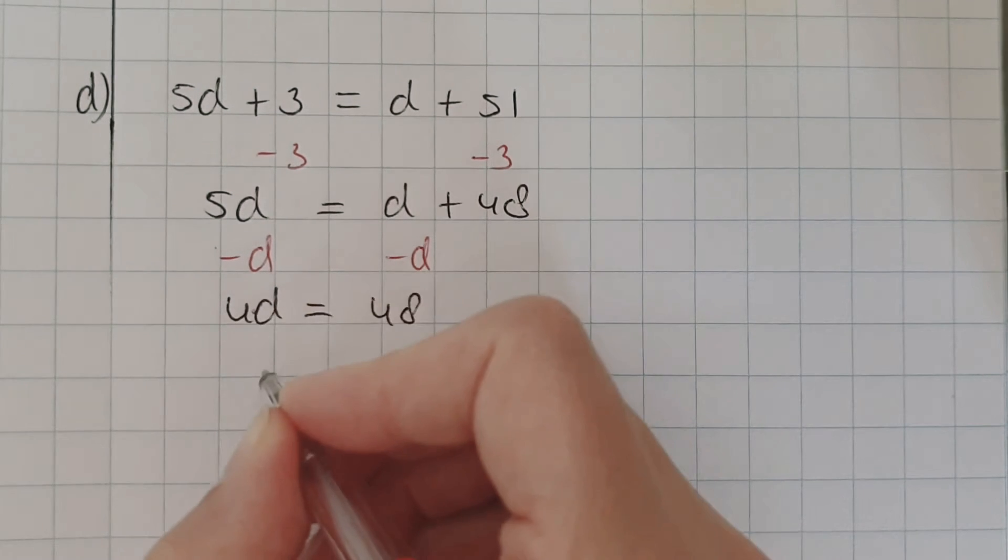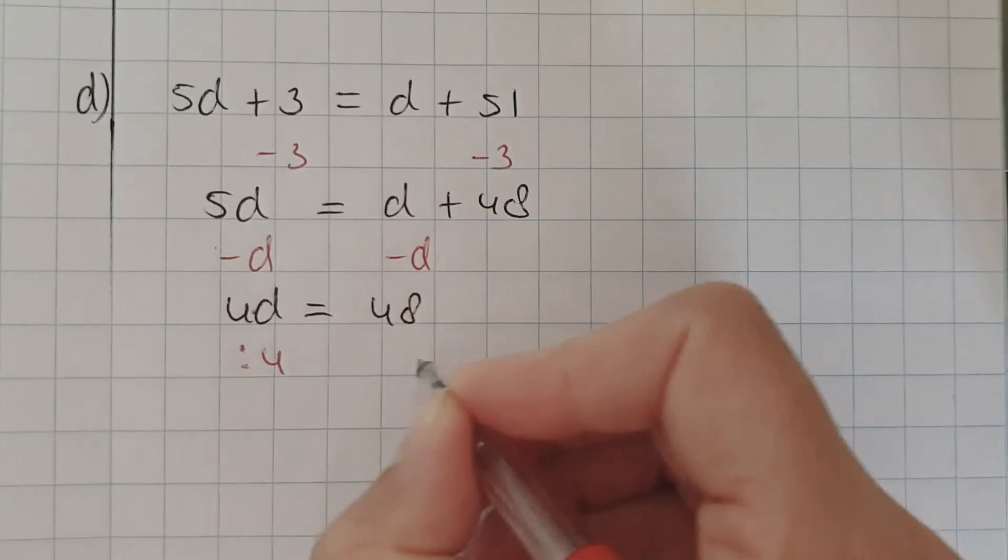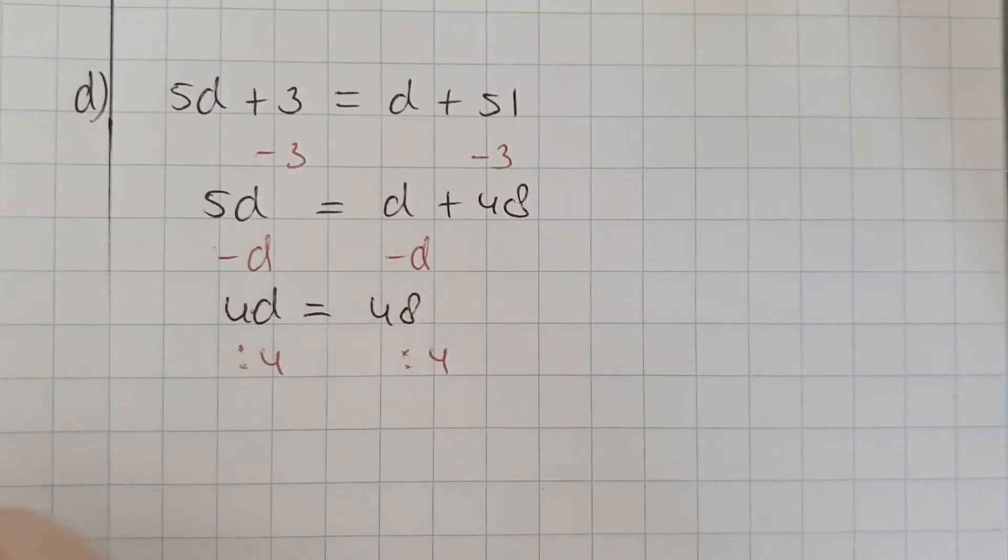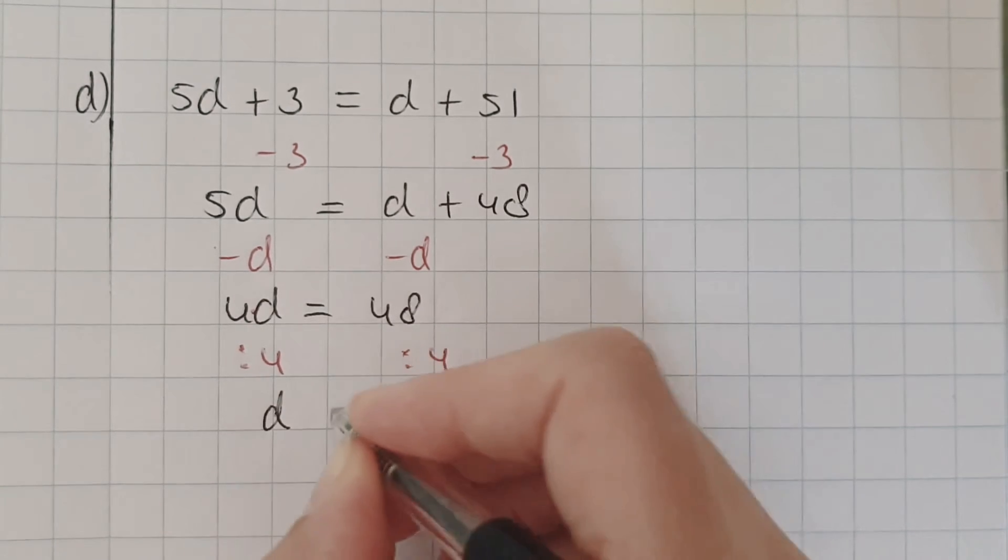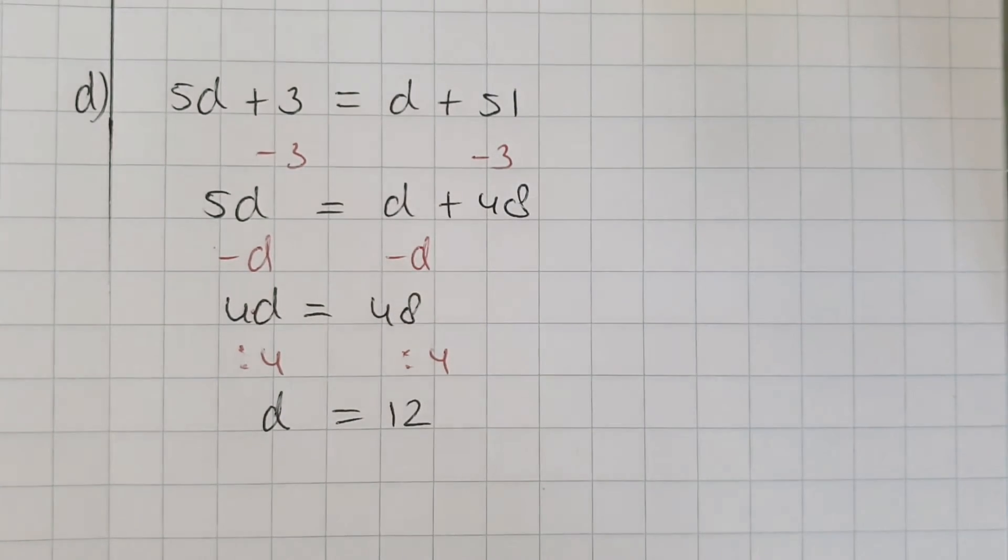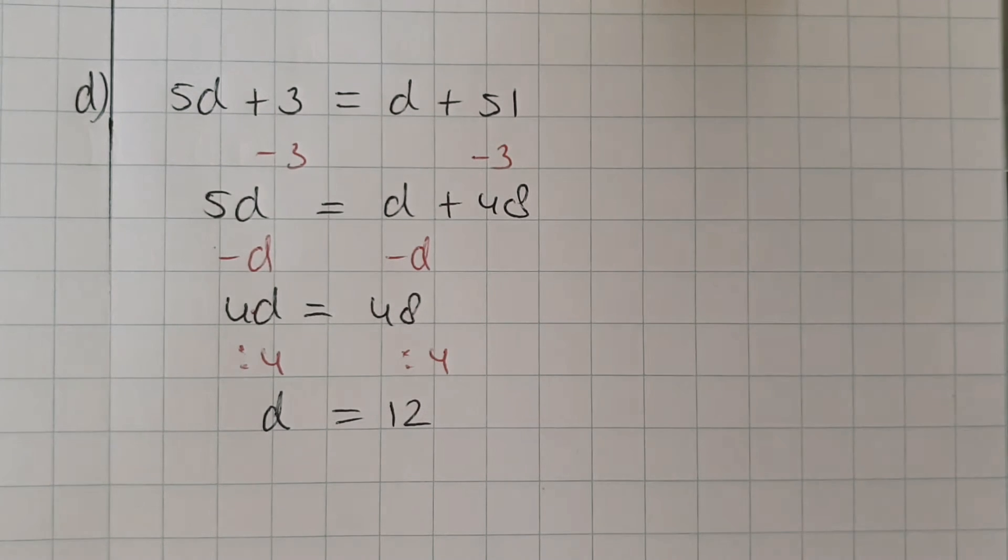Now, there's times here. I'm going to do the opposite of doing times, that's divided by. So divided by the number in front of it. Why? Because 4 divided by 4 equals 1. And then I have 1d. 48 divided by 4 is 12. So the answer is d is 12.